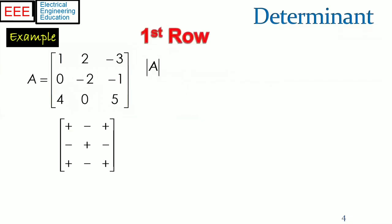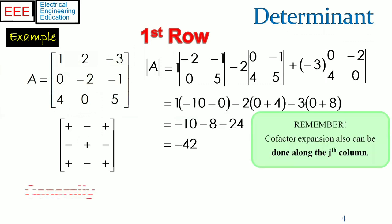An example to find the determinant of a 3 by 3 matrix with respect to the first row is shown. Please remember that cofactor expansion can also be done along the j-th column.